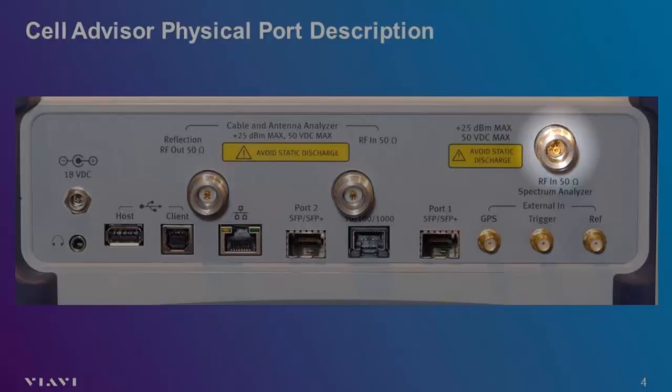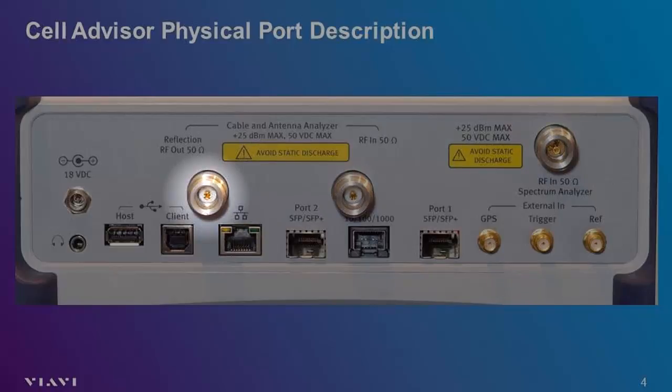The far left RF port, labeled Antenna Analyzer Output and Return Loss, is used to sweep cables. This is the port you will use to determine the VSWR of an antenna system, or locate a fault using a distance-to-fault measurement. This port is also used as the source for making two-port insertion loss or insertion gain measurements, and can be configured to output a continuous wave, or CW signal. Certain models within the Cell Advisor product line may be configured without this port.